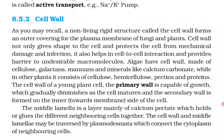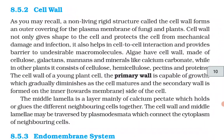Cell wall: a non-living rigid structure called the cell wall forms an outer covering for the plasma membrane of fungi and plants. The cell wall not only gives shape to cells and protects them from mechanical damage and infection, it also helps in cell-to-cell interaction and provides a barrier to undesirable macromolecules. Algae have a cell wall made up of cellulose, galactans, mannans, and minerals like calcium carbonate, while in other plants it consists of cellulose, hemicellulose, pectins, and proteins.